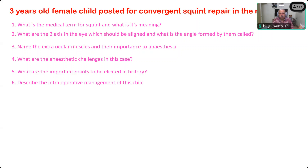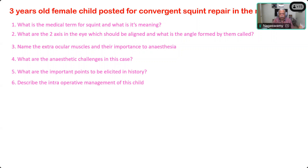Supposing you find the child is otherwise fit - CVS, RS everything is all right, no LRI, no URI - child's hemoglobin is normal, weight gain is normal. What should be the ideal weight for this child who is 3 years old? Age into 2 plus 8, so 14 kg.